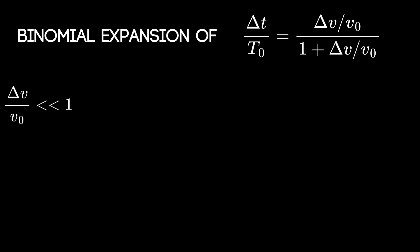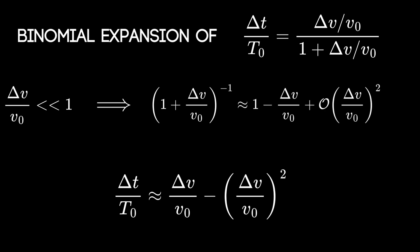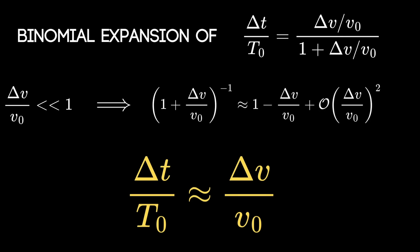And one can see this very clearly using a binomial expansion. When delta v over v naught is small, we can expand 1 plus delta v over v naught to the minus 1 as 1 minus delta v over v naught plus something order delta v squared. Which then gives us the following expression for delta t over t naught. And as I said, if we are not speeding too much compared to the speed limit, we can drop the quadratic term and this gives us the one to one scaling.